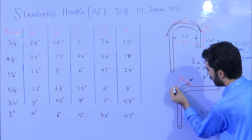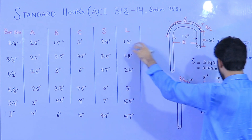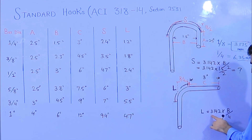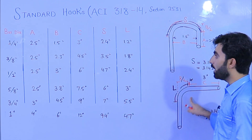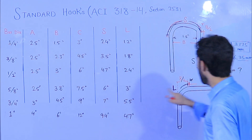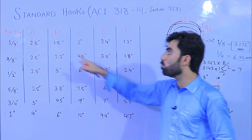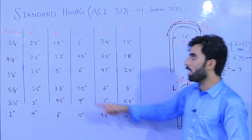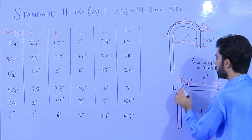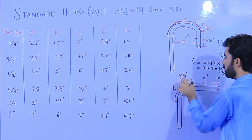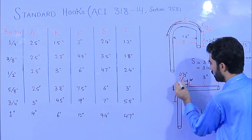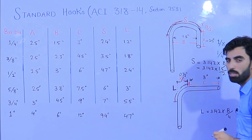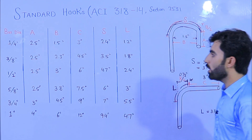For dimension L, it should be 1.2 inches, or you can calculate it using the formula: L = (3.142 × B) ÷ 2 ÷ 2, which equals B ÷ 2. Since B is 1.5 inches, dividing by 2 gives 0.75 inches. So for the 1/4 inch (No. 2) bar, L equals 0.75 inches — this is the depth of the hook end, from here to here. The formula is B divided by 2.